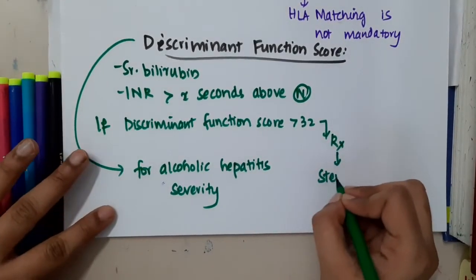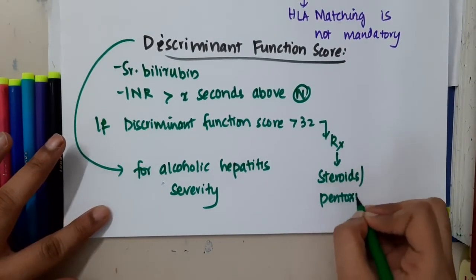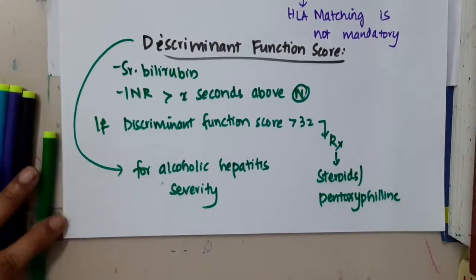The treatment is you should start the patient either on steroids or you should give pentoxifylline to the patients. So this is discriminant function score.